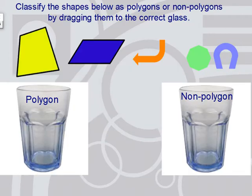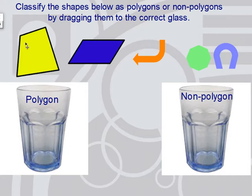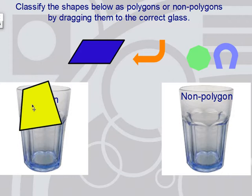Let's classify these shapes below as polygons or non-polygons by dragging them to the correct class. I'm going to start with this shape. Does it have at least three sides? Yes, I see four. Are the sides straight and not curved? Yes. Do any of the lines intersect? No. We checked: there are at least three sides, none of them are curved, none of them intersect, and it's a closed shape with no openings. So yes, this is a polygon.